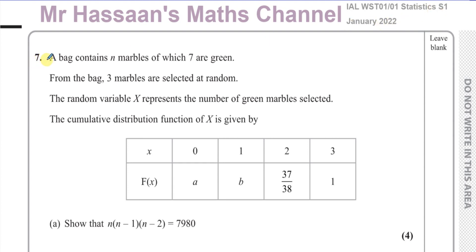It tells us about a bag which contains n marbles, of which 7 are green. From the bag, 3 marbles are selected at random. The random variable X represents the number of green marbles selected.